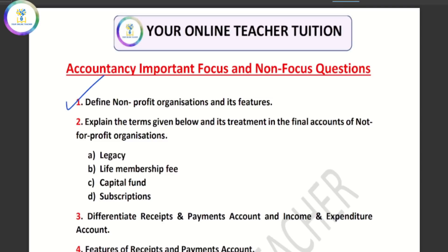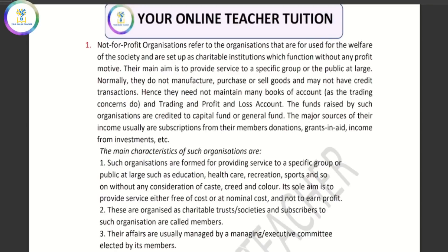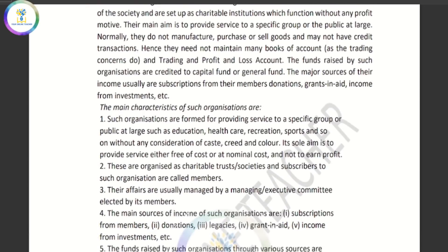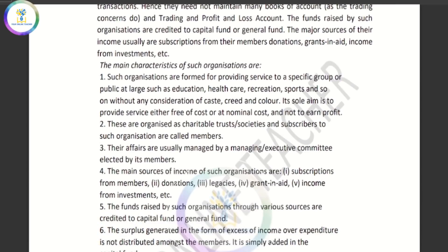What is a not-for-profit organization? What are the features of not-for-profit organizations? These are organizations that provide services to society. They are not doing trading. They maintain their books and they maintain their receipts and payments and their income and expenditure. If you have a specific group that provides a full service, it could be a charitable trust organized by society.